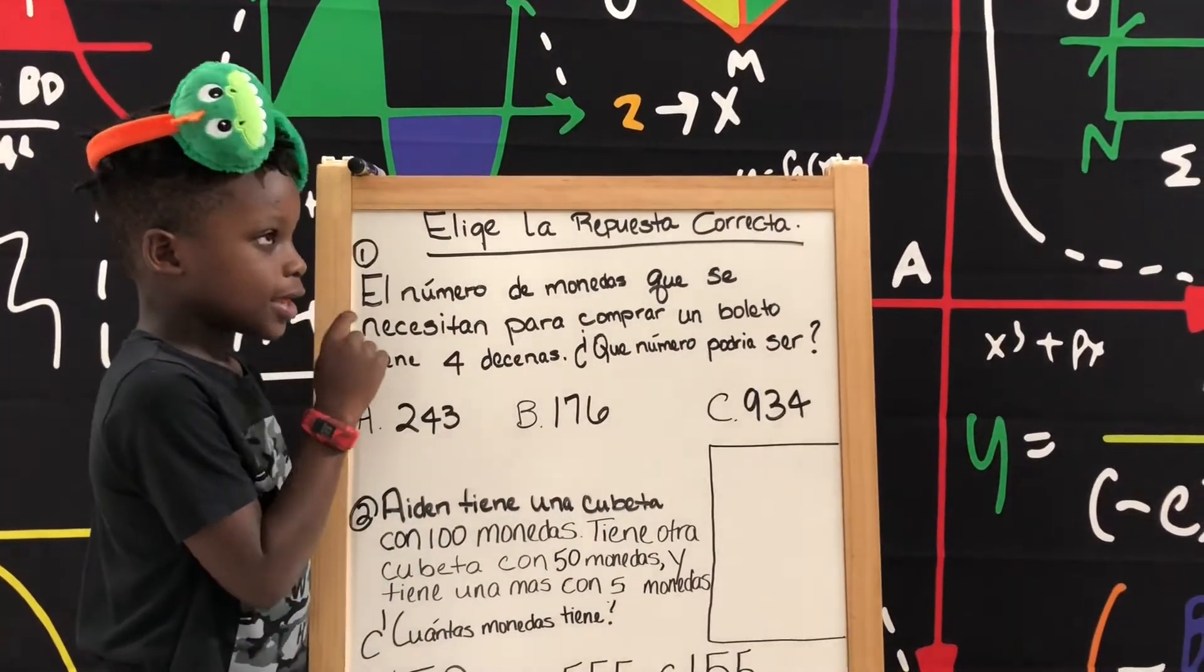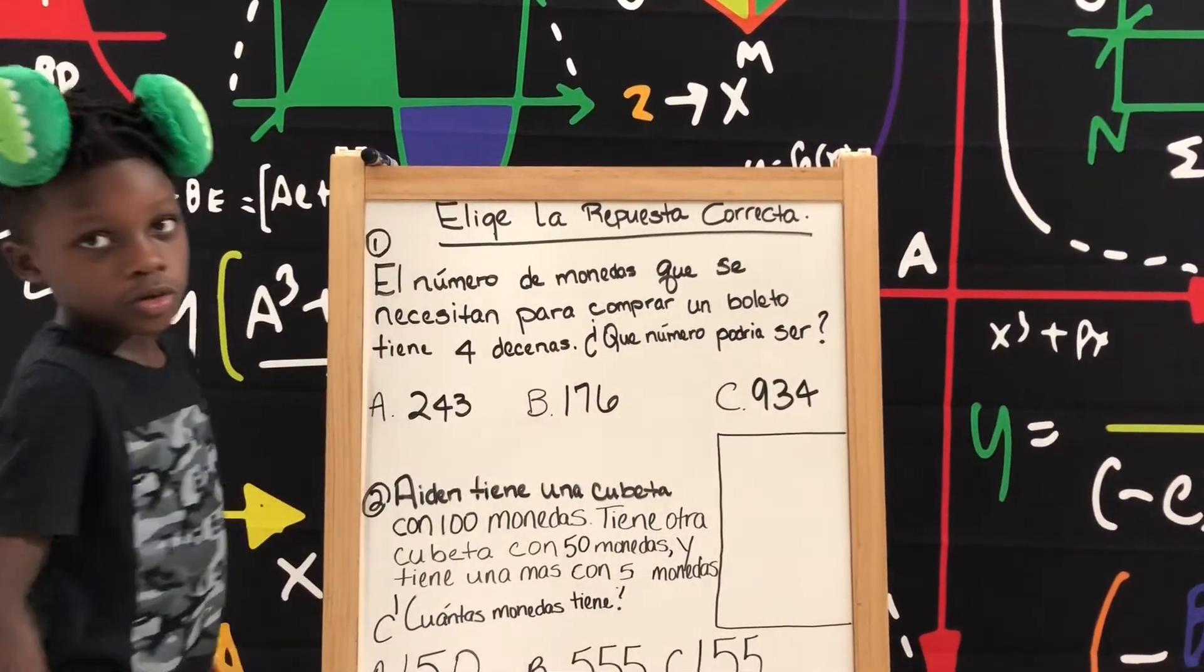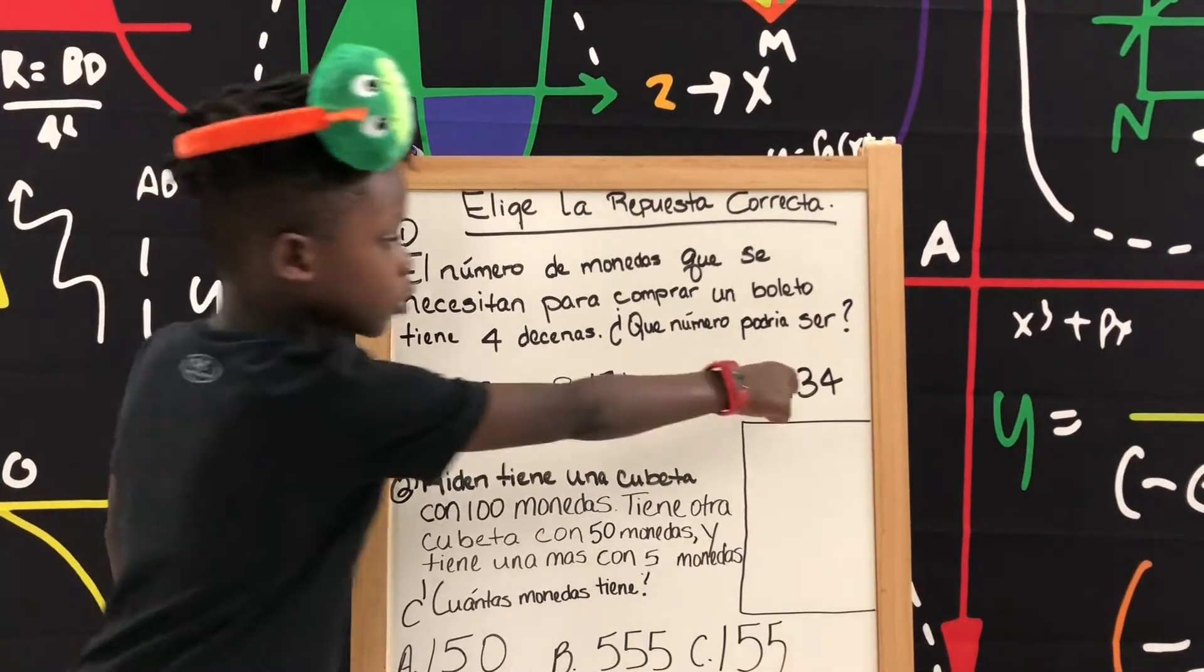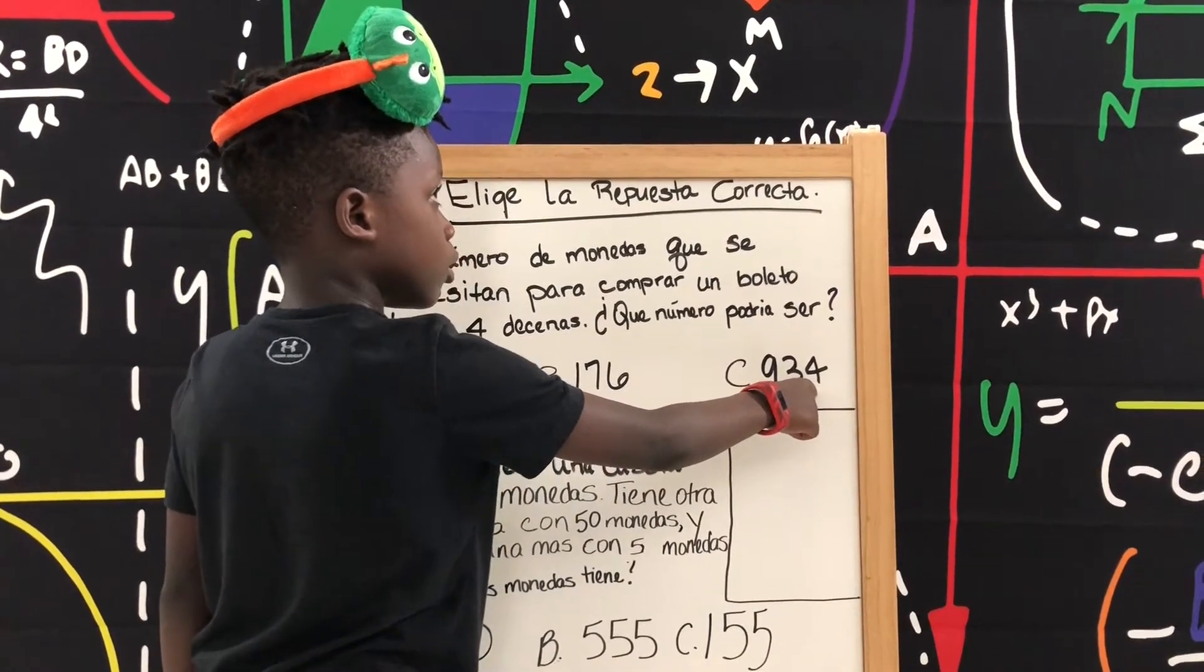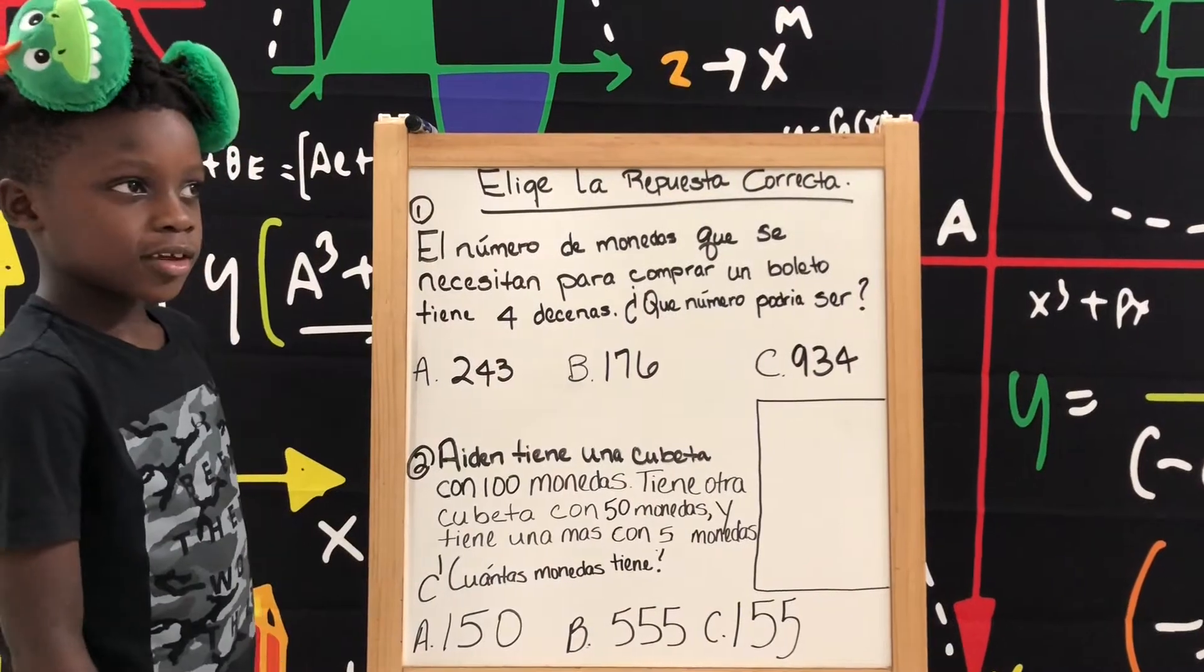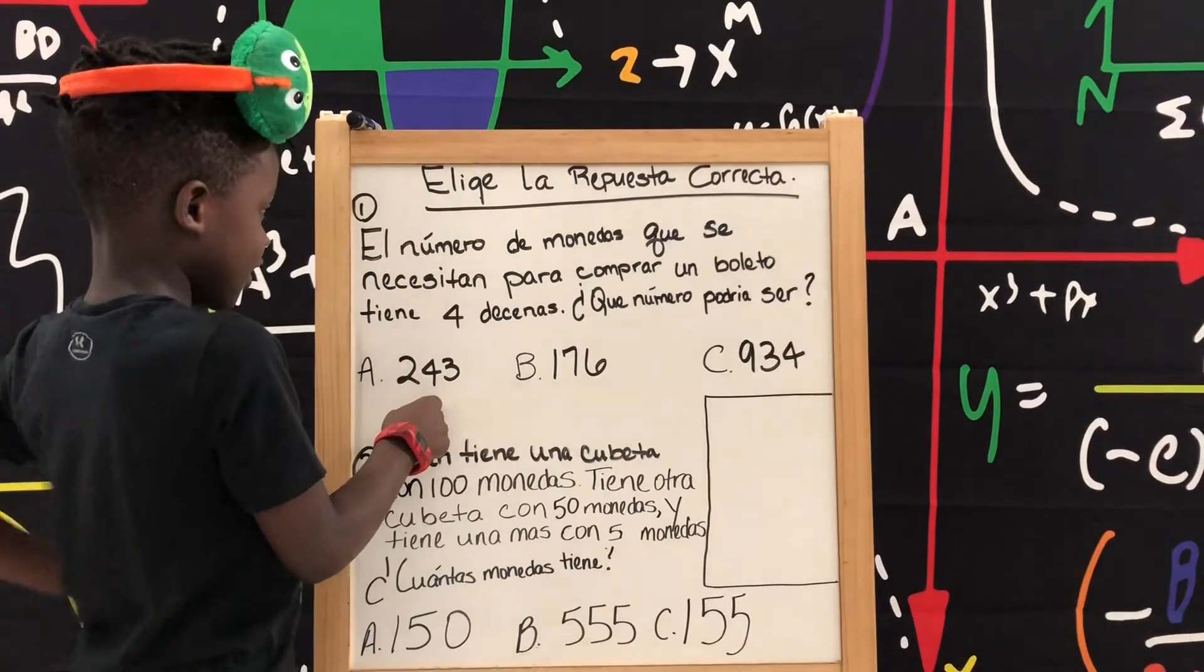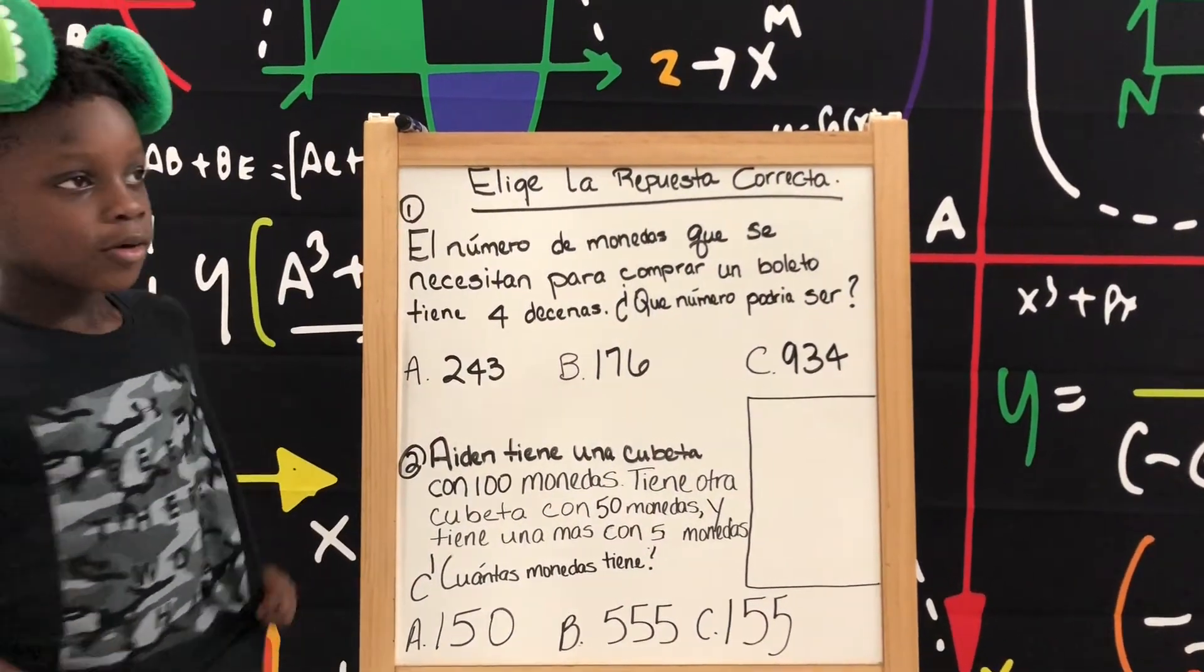Entonces, las decenas columnas están... ¿Dónde está un cuatro? Un cuatro aquí... No están en las decenas. Están en las unidades. Oh, aquí! Están en las decenas columnas. Bien.